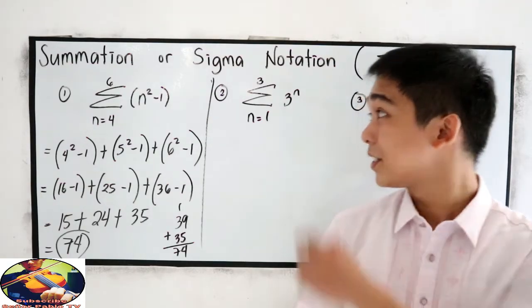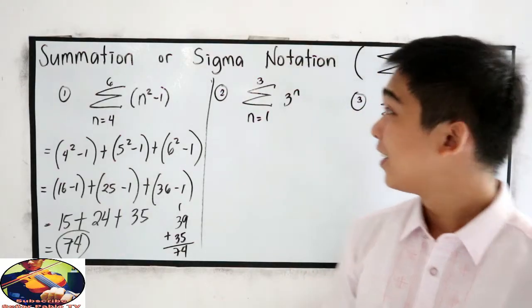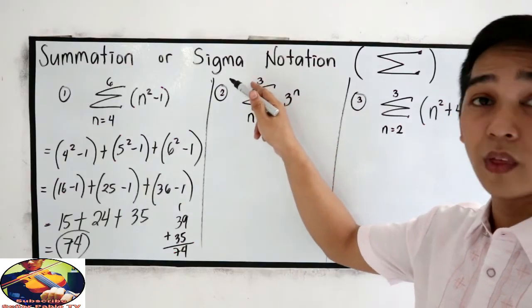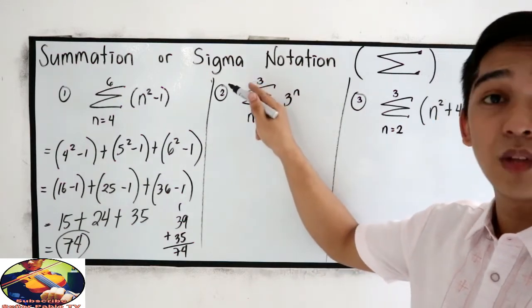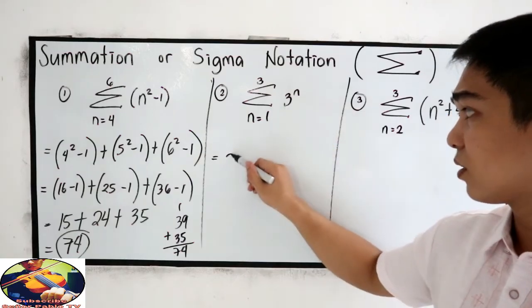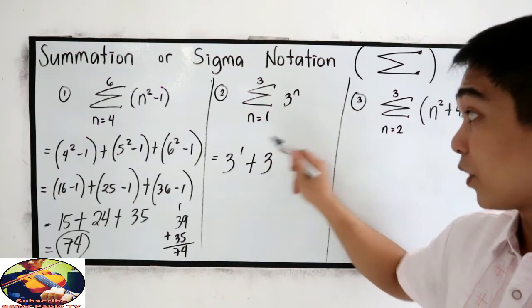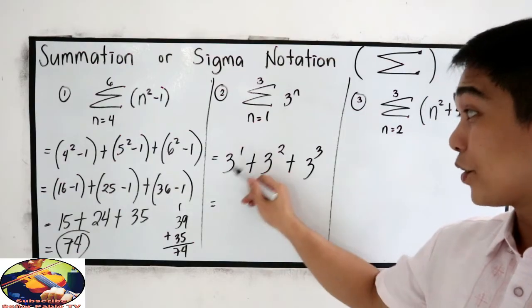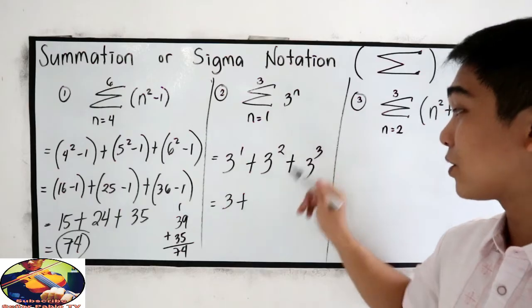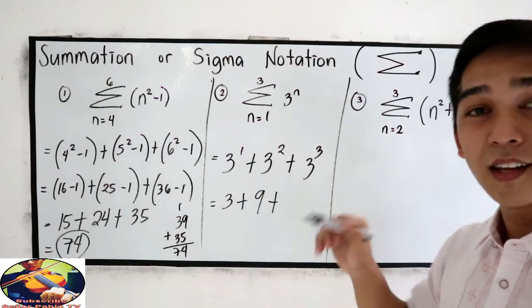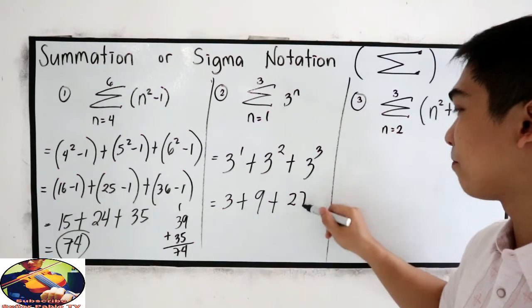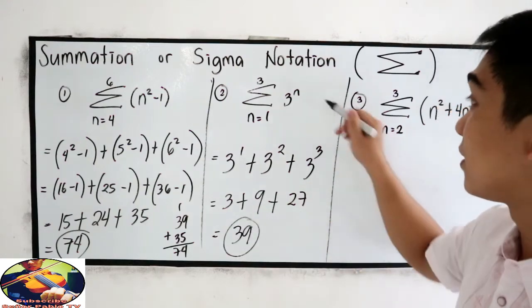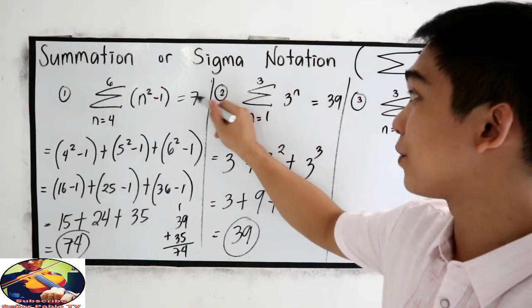Now let us check your number 2 exercise. Summation of 3 raised to N, from N equals 1 to 3. So we are going to start at 1 and end at 3. 3 raised to 1 is 3, plus 3 raised to 2 is 9, plus 3 raised to 3, which is 27. 3 plus 27 is 30, plus 9 equals 39. So this is equal to 39. For number 1, equal to 74.